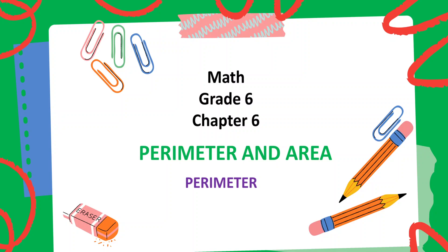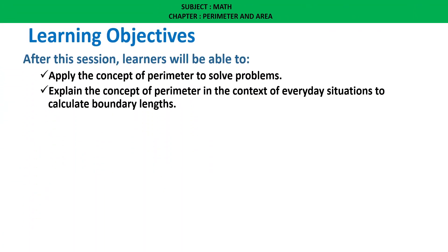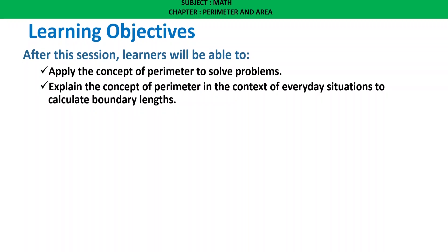Good morning everyone. Let's start Maths Grade 6 Chapter 6: Perimeter and Area. Subtopic: Perimeter. Learning Objectives: After the session, learners will be able to apply the concept of perimeter to solve problems, and explain the concept of perimeter in the context of everyday situations to calculate boundary lengths.